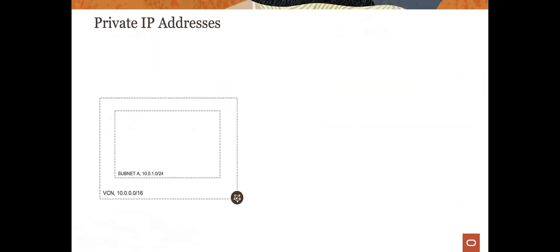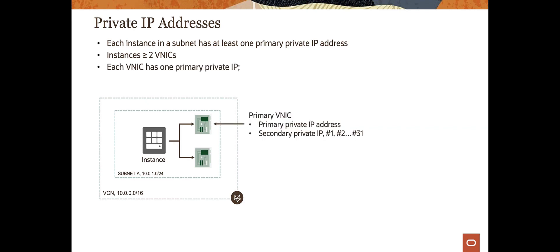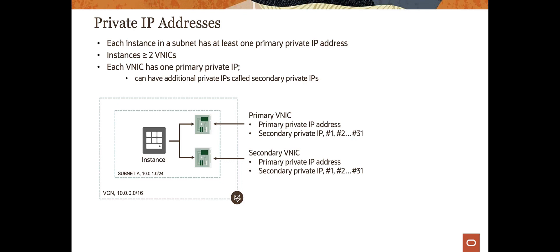Talking about private IP addresses: the VCN sits here, the subnet sits within it, and your instance sits within that. Every instance provisioned in a subnet will have at least one primary private IP address designated to it upon creation. VNICs — Virtual Network Interface Cards — can be attached to the instance, and they can also have additional IP addresses added to them. The first VNIC attached to every instance will always be designated as the primary VNIC, and anything after that will be secondary, tertiary, and so on.